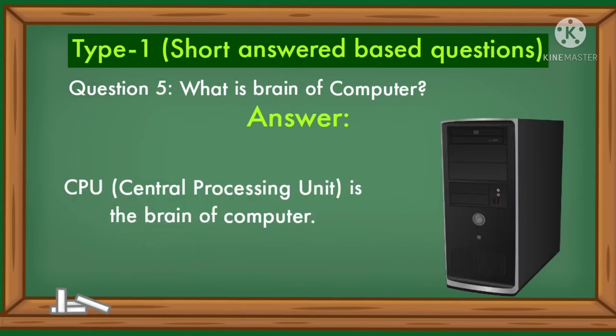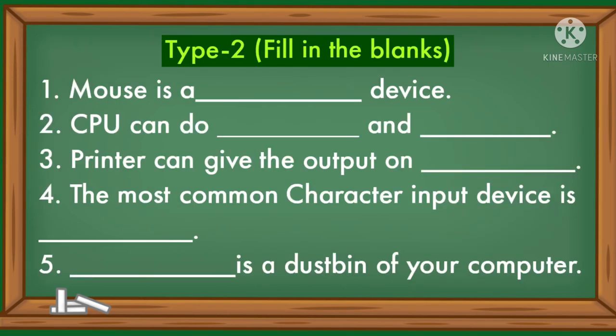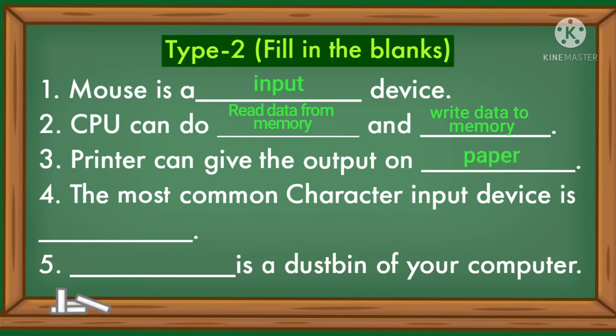What is the brain of the computer? CPU — Central Processing Unit — is the brain of the computer. Fill in the blanks: Mouse is an input device. CPU can read data from memory and write data to memory. Printer can give output on paper. The most common character input device is keyboard. Recycle bin is a dustbin of your computer.